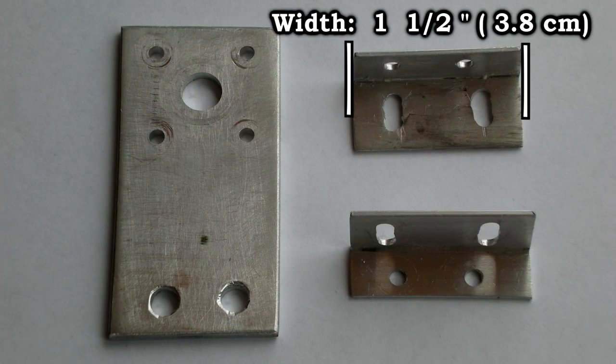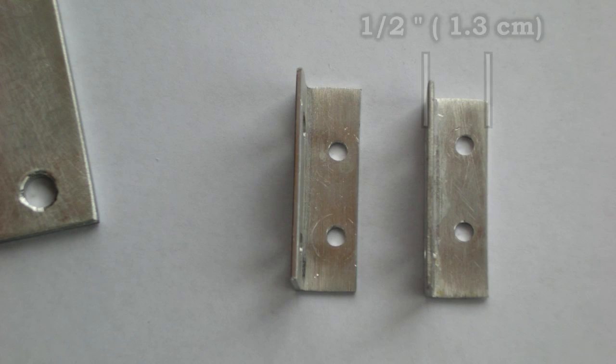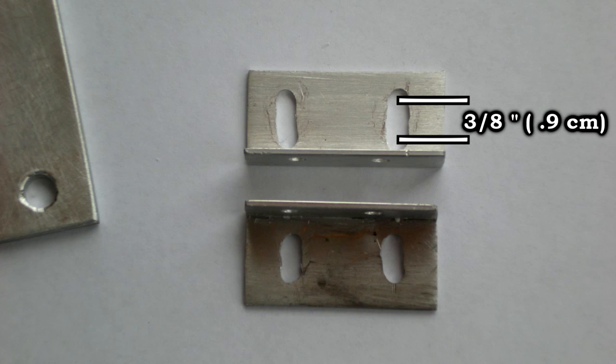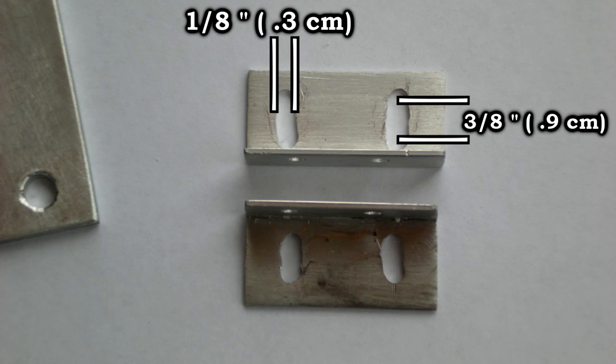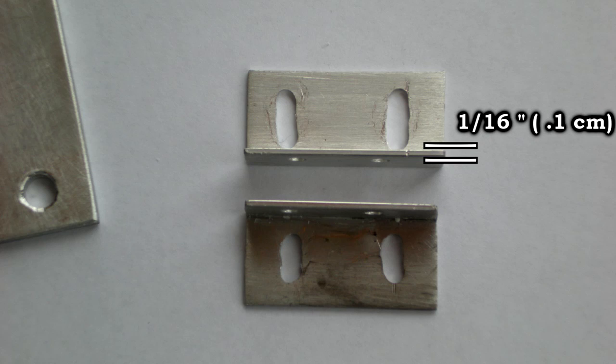These brackets are one and one half inches wide. The sides of the brackets that touch the wooden base are seven eighths of an inch. The sides that clamp the aluminum support column are one and a half inch tall. The slots in the brackets are about three eighths of an inch long and are supposed to be an eighth of an inch wide. They didn't turn out so well but they still serve their purpose. The thickness of the brackets is about one sixteenth of an inch.